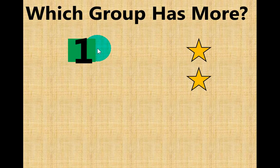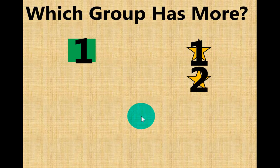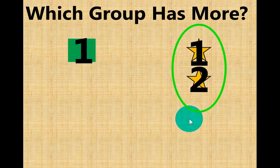One — one green square. One, two — two gold stars. Which group has more? That's right, the gold stars. There are two gold stars.